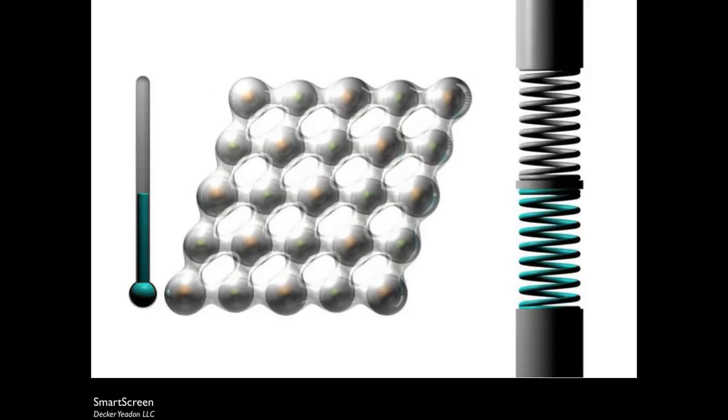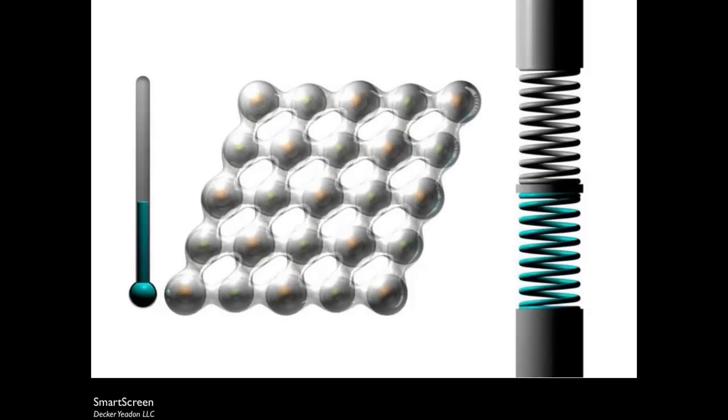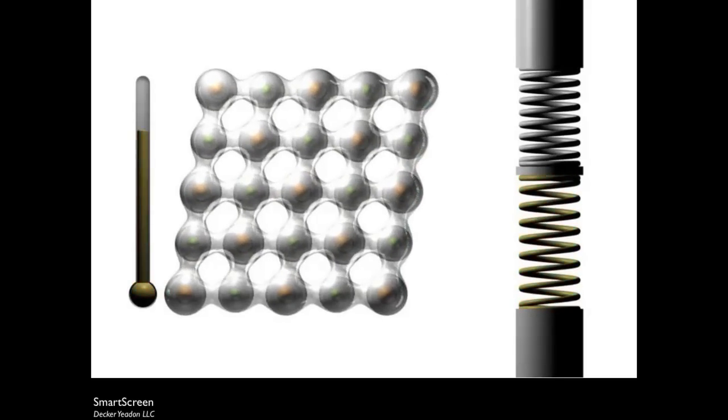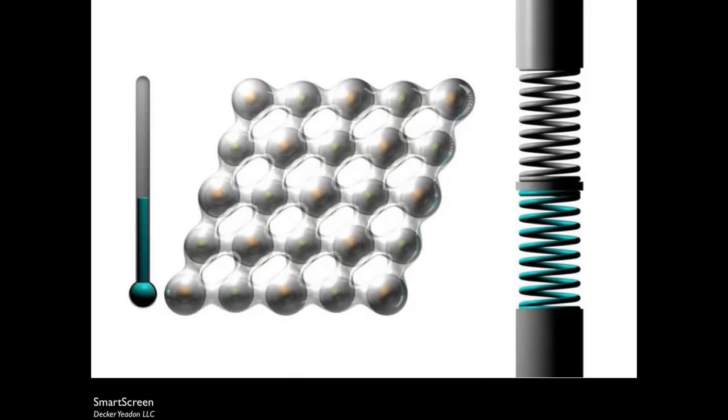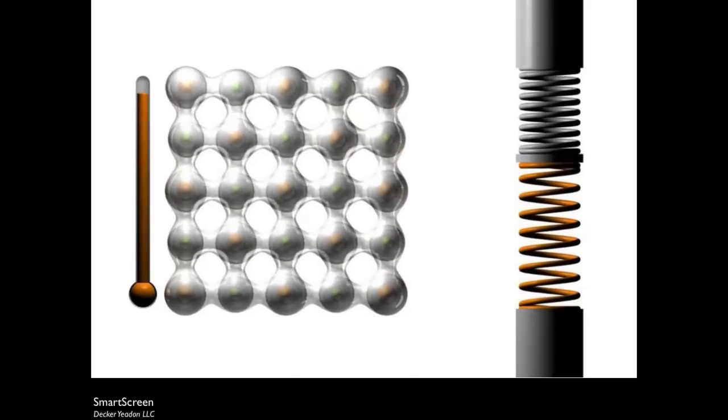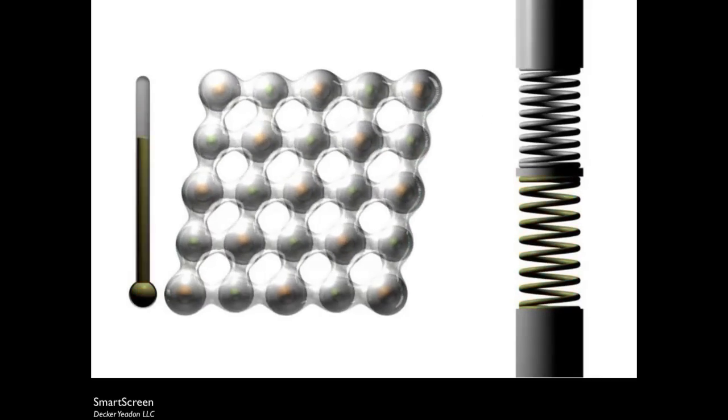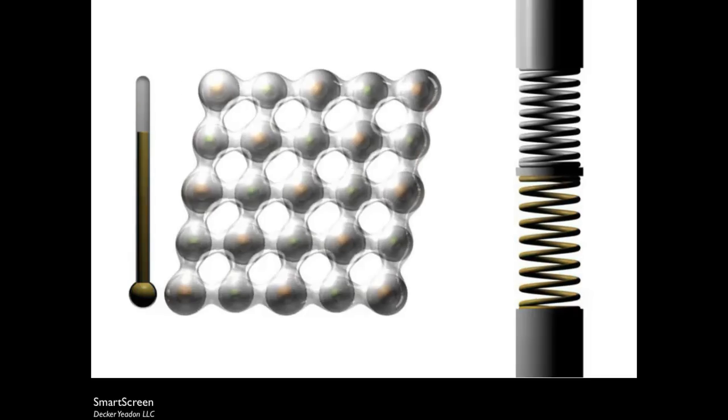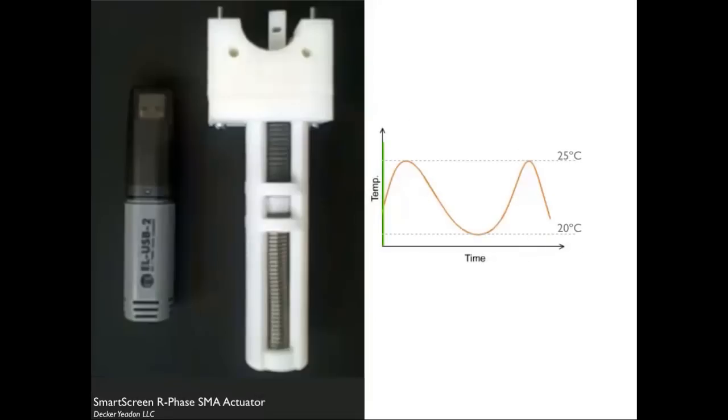As soon as the material warms up, the shape memory alloy will want to go back to its original state and becomes stronger and works against the counterspring. They're in a constant tug-of-war. And as long as I keep these little atomic bonds happy, if I don't break them, if I don't deform them beyond a certain point, we can get millions of cycles out of this actuator.